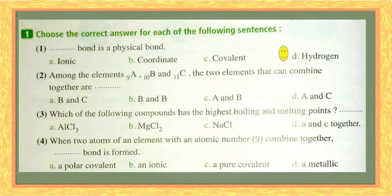Let's go to question two. Among the elements A (atomic number 9), B (atomic number 10), and C (atomic number 11), which two elements can combine together? Element A has electronic configuration two and seven, so it has seven in the outer shell — it's monovalent. Element B has configuration two and eight — it's an inert gas, so it will not form a bond.